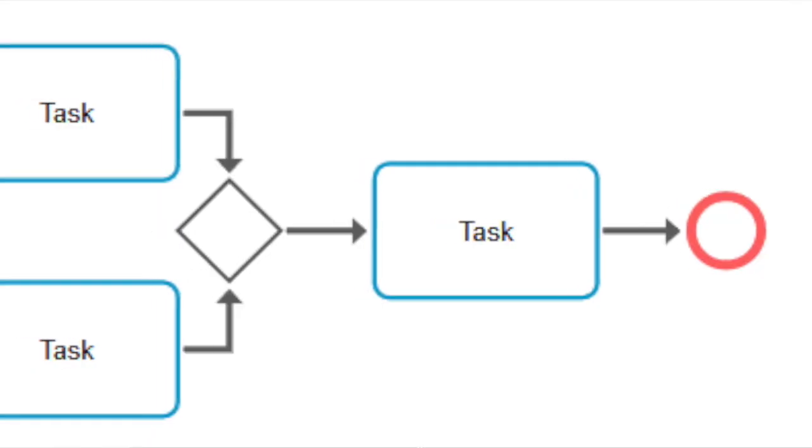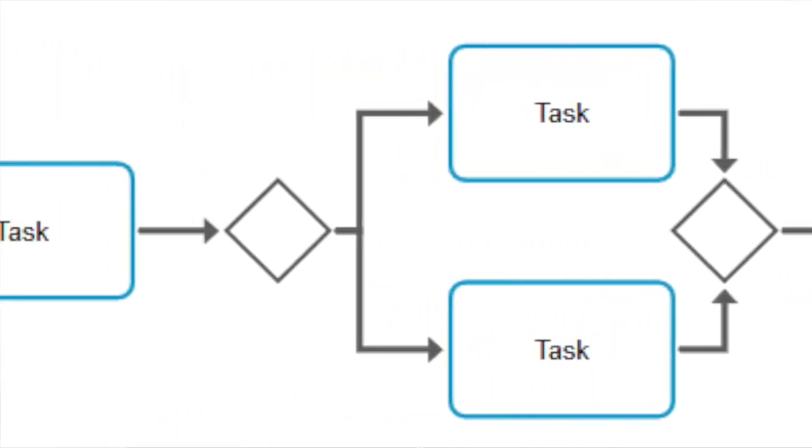One of the golden rules of Process Mapping: keep it simple and visual. Avoid the temptation to overcrowd your map with excessive details or jargon. Instead, focus on clarity and brevity. Utilize symbols, colors, and diagrams to convey information effectively. Remember, a picture is worth a thousand words.